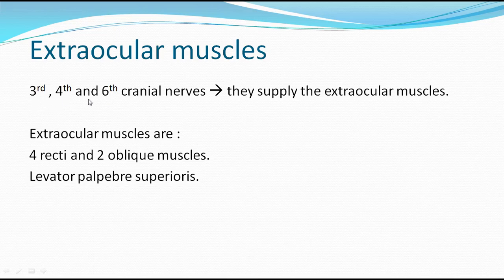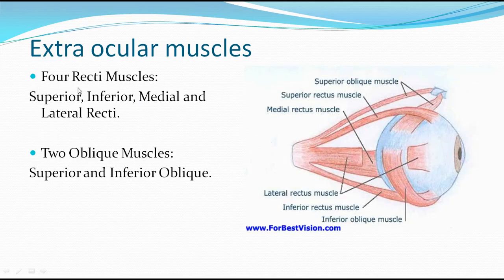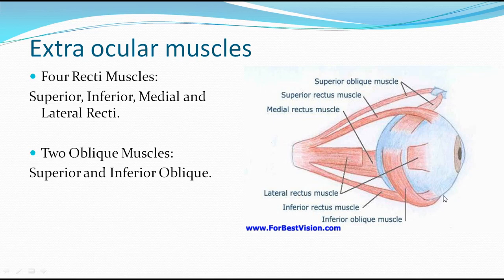The four recti muscles are positioned around the eyeball: superior rectus above, inferior rectus below, medial rectus medially towards the midline, and lateral rectus away from the midline. The plural of rectus is recti. The two oblique muscles are obliquely oriented to the eyeball - superior oblique coming from above, and inferior oblique from below.